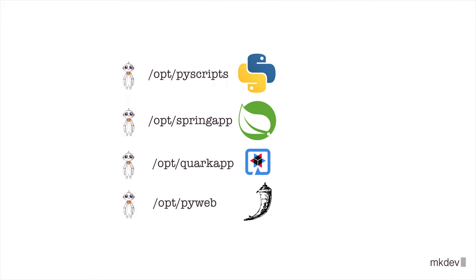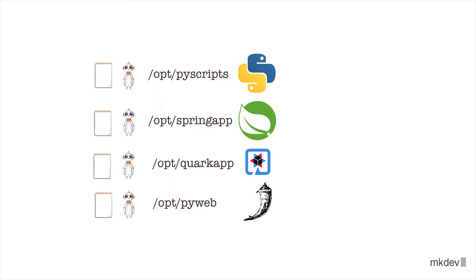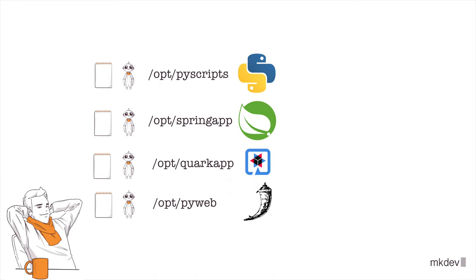To actually run the application, you create new systemd services for each app with cgroups, making sure that system resources are managed properly. It works pretty well for some time. Thanks to the proper combination of Linux users, file permissions, SELinux labels, and systemd unit definitions, you have a secure multi-tenant server.